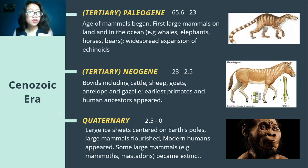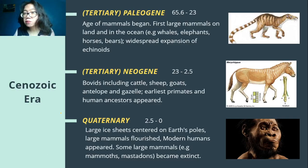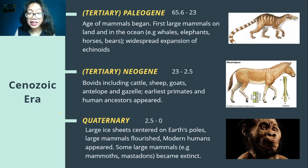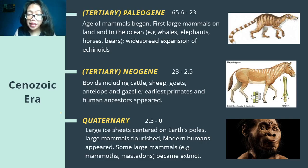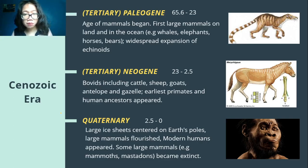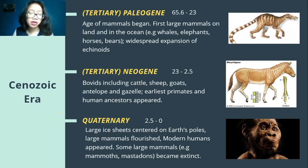Cenozoic Era. I have mentioned before that human beings exist in the Phanerozoic Eon. We also exist within the Cenozoic Era and within the Quaternary Period. Take note: Quaternary Period.